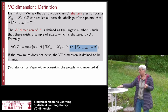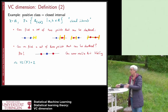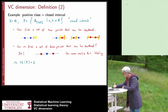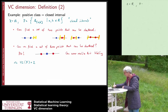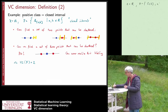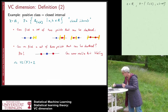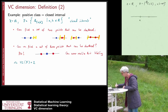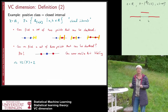Let's look at some examples. Our data space is the real line X = R and our function class consists of characteristic functions of closed intervals [A, B], where A and B are real numbers — that is, the function is one on the interval and zero outside.